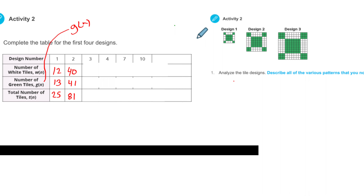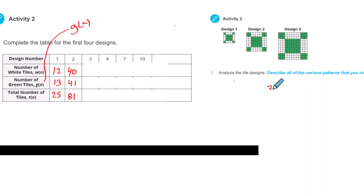We have to figure out what the equation is so we can work it out. Looking for patterns — we're going to do green first. The first design: if I count the green, I said it's 3 times 3, and then there were 4 extra. So 3 times 3 plus 4. I'm going to write that as 3 squared plus 4. That's how I get the total of 13. It's just 9 plus 4, which is 13.